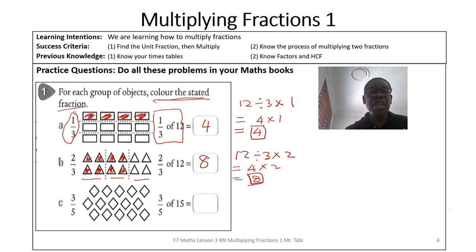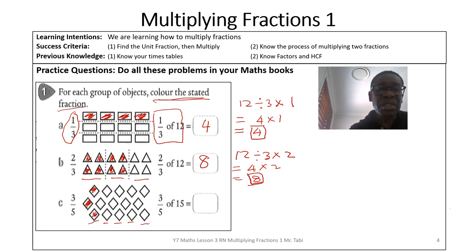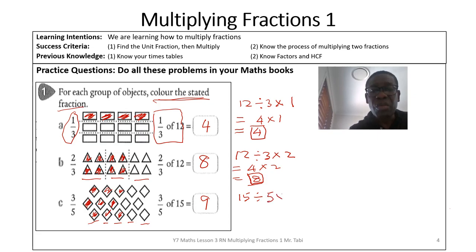Now we have 15 and we want three-fifths of 15. All we need to do is divide 15 into five equal groups — that will be 1, 2, 3, 4, and 5, and each group is made up of three things. Three-fifths will be three lots of that: that's one lot, that's the second lot, and that's the third lot. So that will be 9. By the calculation, it's 15 divided by 5 multiplied by 3. 15 divided by 5 gives you 3, multiplied by 3 gives you 9.